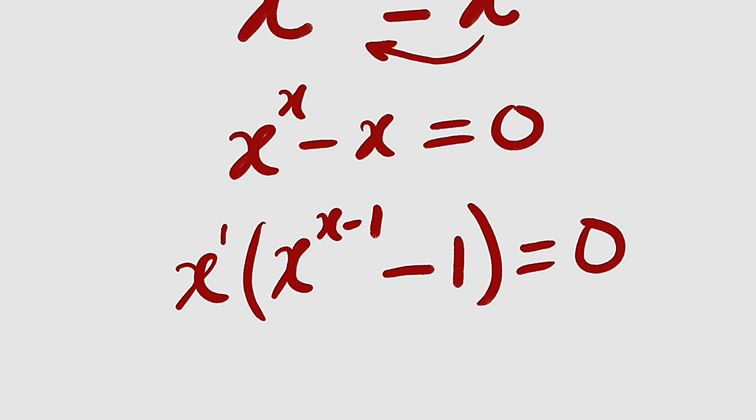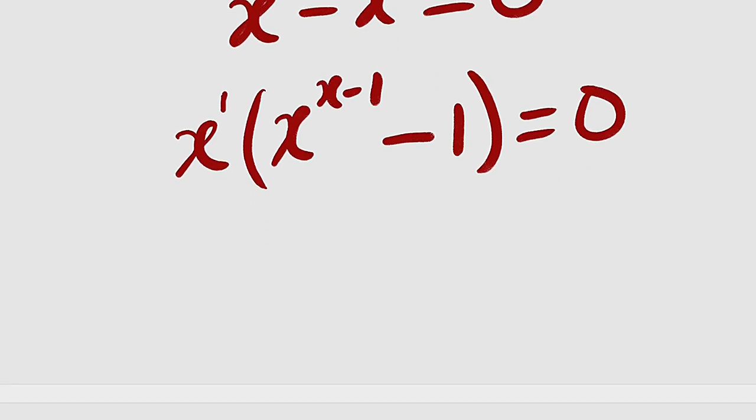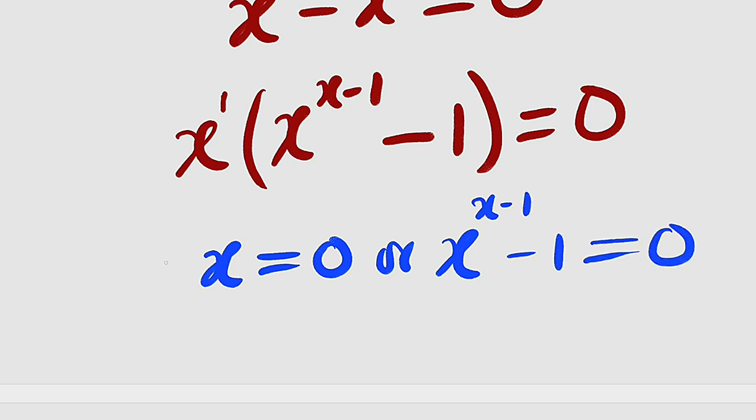Now we have two factors. We are going to set each to be equal to 0. It implies that either x equal to 0 or the other one x to the power of x minus 1 minus 1 also equal to 0. This is one solution right here, x equal to 0. We are coming back to verify.